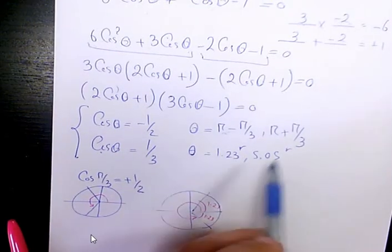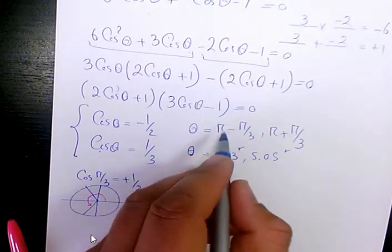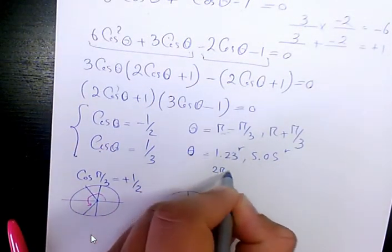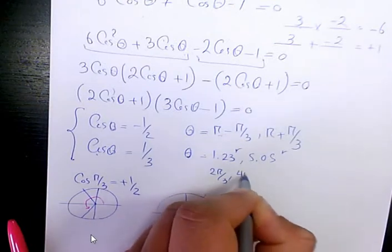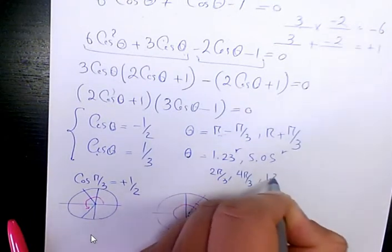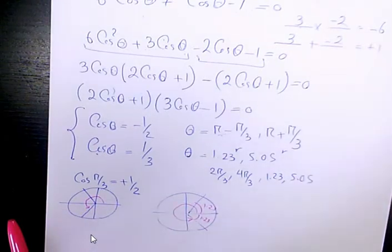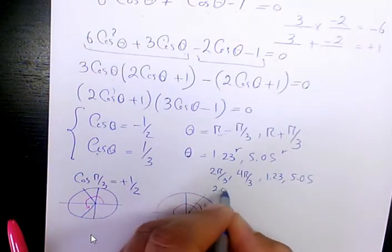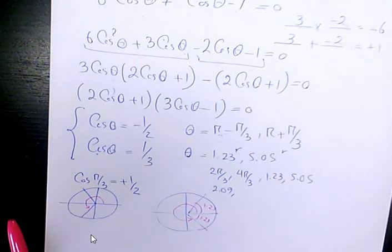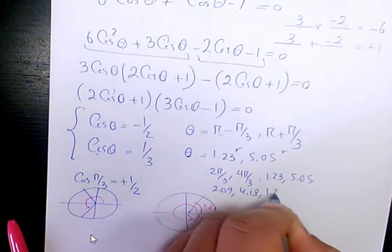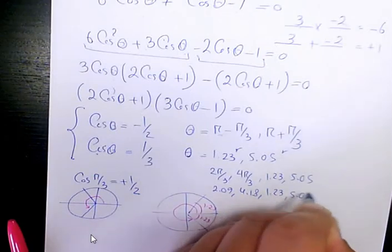So these are the four answers. I will write it like that: 2 pi over 3, 4 pi over 3, 1.23, 5.05. And you know how to convert pi. Pi is 3.14 times 2 divided by 3, that will be 2.09. Here, that's going to be 4.18, 1.23 and 5.05.